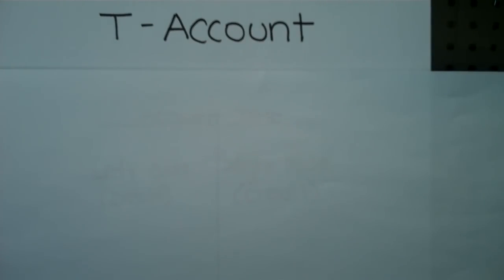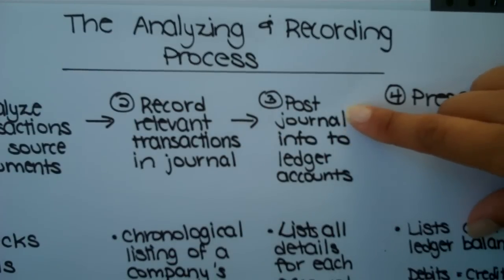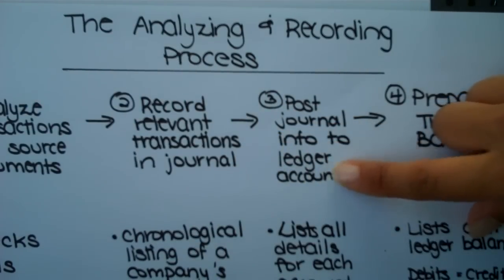So a T-account is basically just a mathematical tool that's going to help you analyze the effects of transactions on specific accounts. It's going to come into play on step three of your analyzing and recording process when we move the information from the journal into the account ledgers.